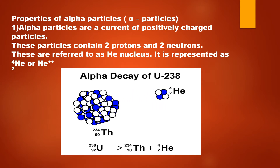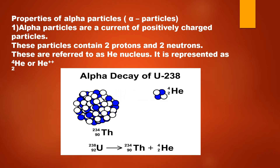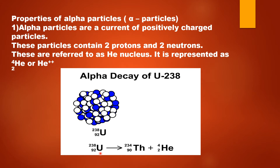We will begin with the properties of alpha particles or alpha rays or alpha radiations. When does the nuclei of a radioactive element emit alpha particles? When the nucleus is unstable because of too many protons, then the radioactive decay takes place by releasing the alpha particles along with energy. Here you can see that there is a nuclei of uranium and it is emitting the alpha particles in order to become more stable, releasing two protons and two neutrons.